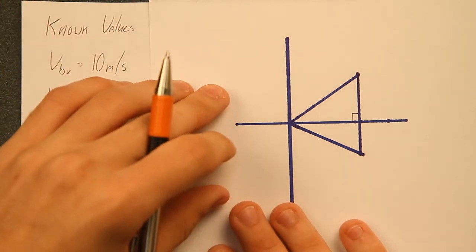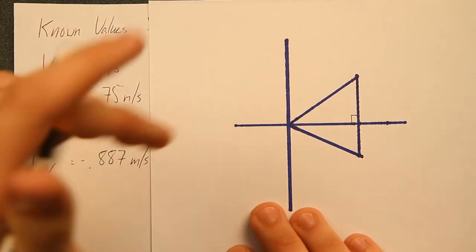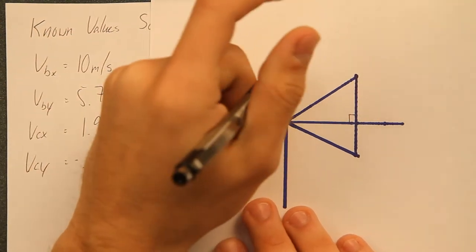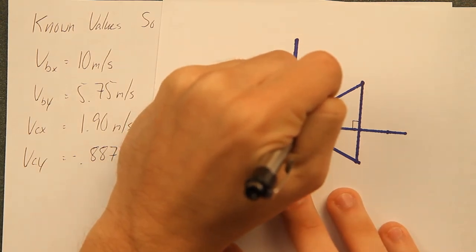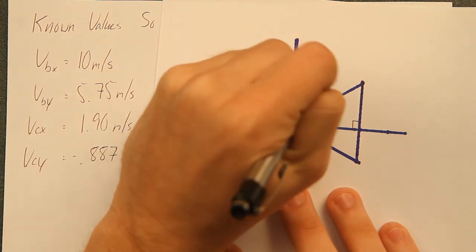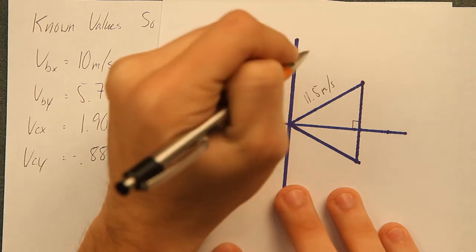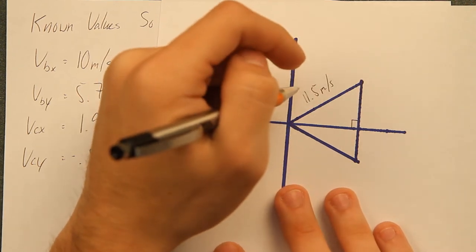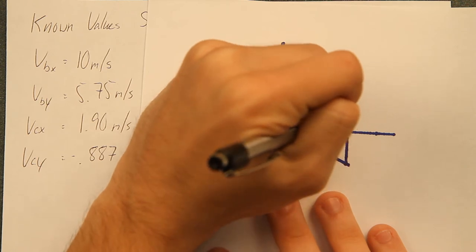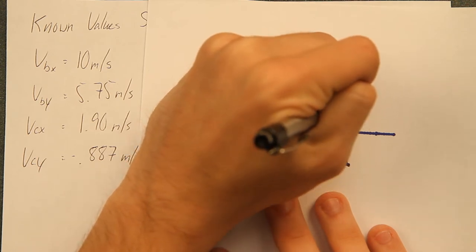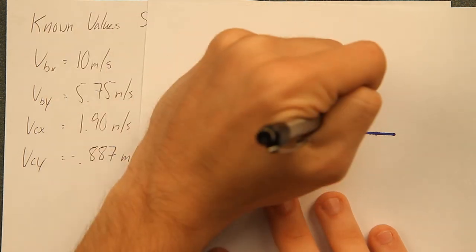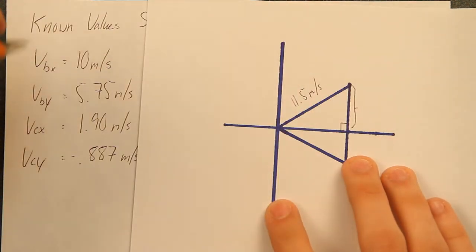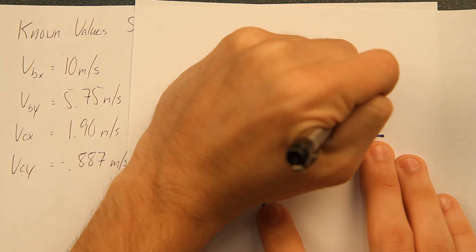We've got our initial velocity of the boat in its direction was 11.5 meters per second. We now know that the velocity on the y-axis was 5.75 meters per second.